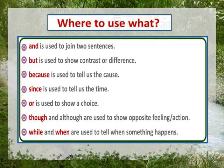Next is 'although'. Although is used to show opposite feeling or action. In conjunctions ka use hum opposite feeling ya action ko show karne ke liye karte hain. Like: although I had an umbrella, I got drenched. Matlab, mere paas umbrella tha phir bhi mein bheeg gaya.